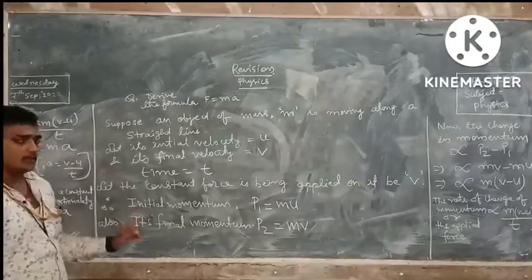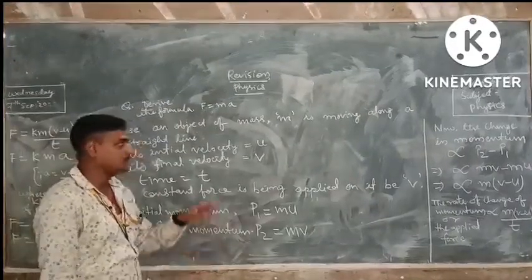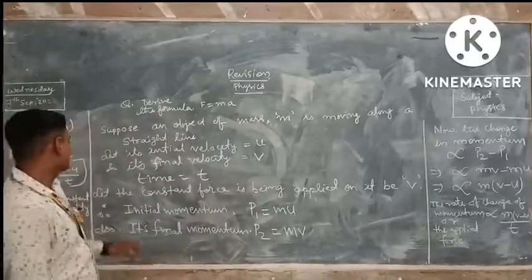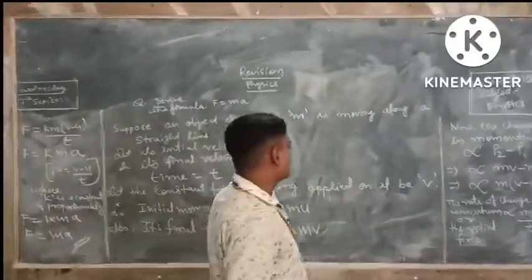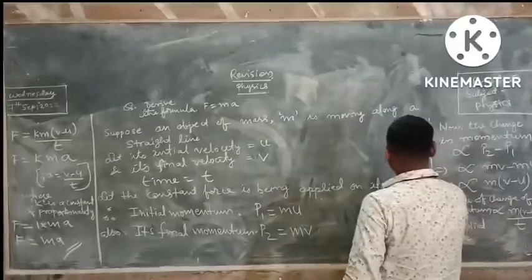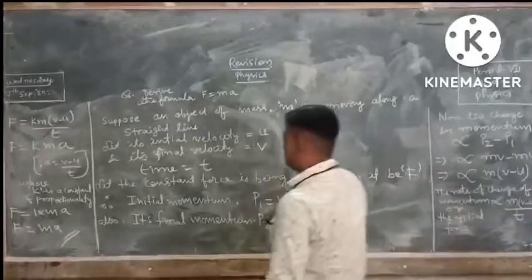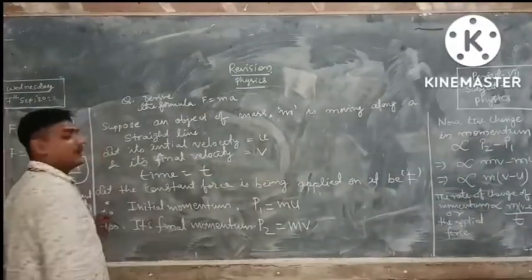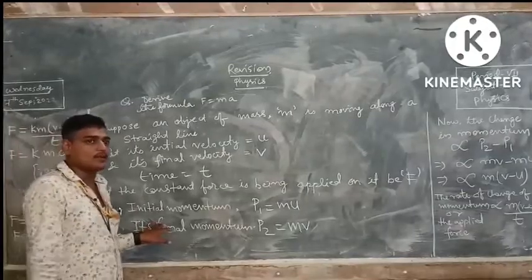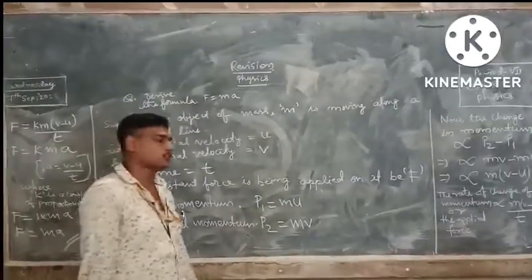A constant force is being applied on it — let that constant force applied on the object be F. Therefore, initial momentum — as we know, momentum is the product of mass and velocity.